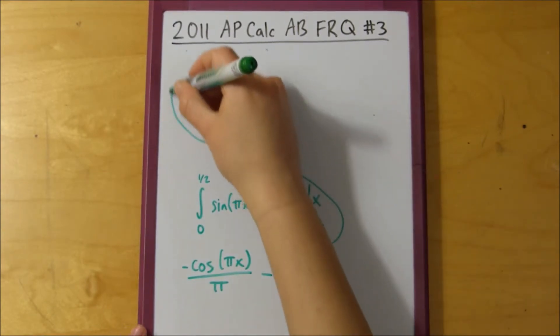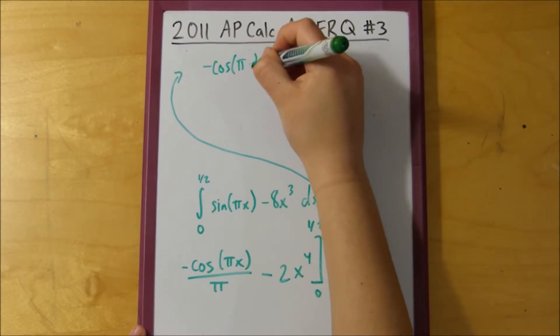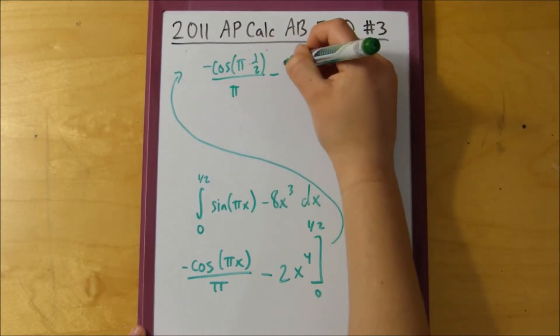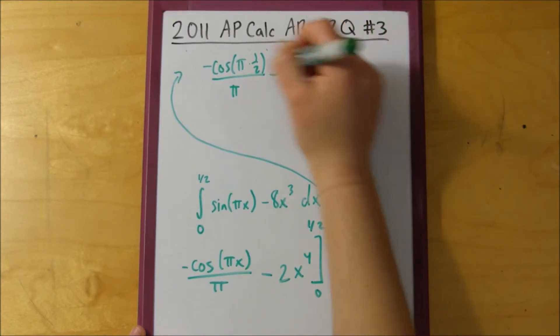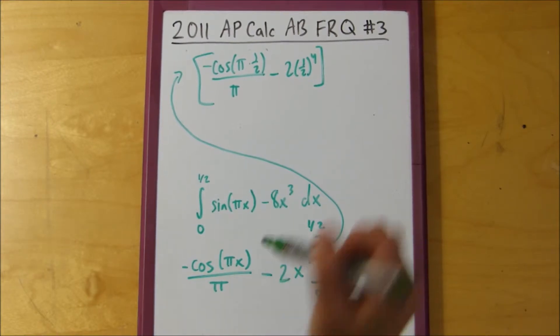So we have negative cosine of pi times 1 half divided by pi minus 2 times 1 half to the fourth, all of that. Notice here that anytime the bounds include a 0, you can't just get rid of the 0. This is especially true with cosine and sine. Sometimes with cosine, if you multiply whatever is inside by 0, you don't always end up with 0. Cosine of 0 is actually 1, so you can't just always assume that this is going to be 0. You have to make sure to plug it in.